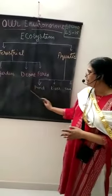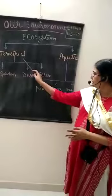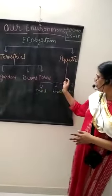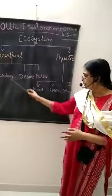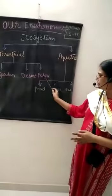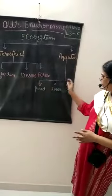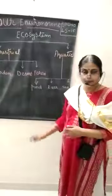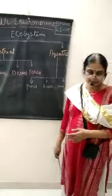So these are the different types of ecosystems — terrestrial and aquatic. Terrestrial is on land; aquatic is water. Both have artificial and natural types. A garden is artificial; desert and forest are natural. For aquatic, pond, river, and sea are natural ecosystems, while an aquarium is an artificial ecosystem.